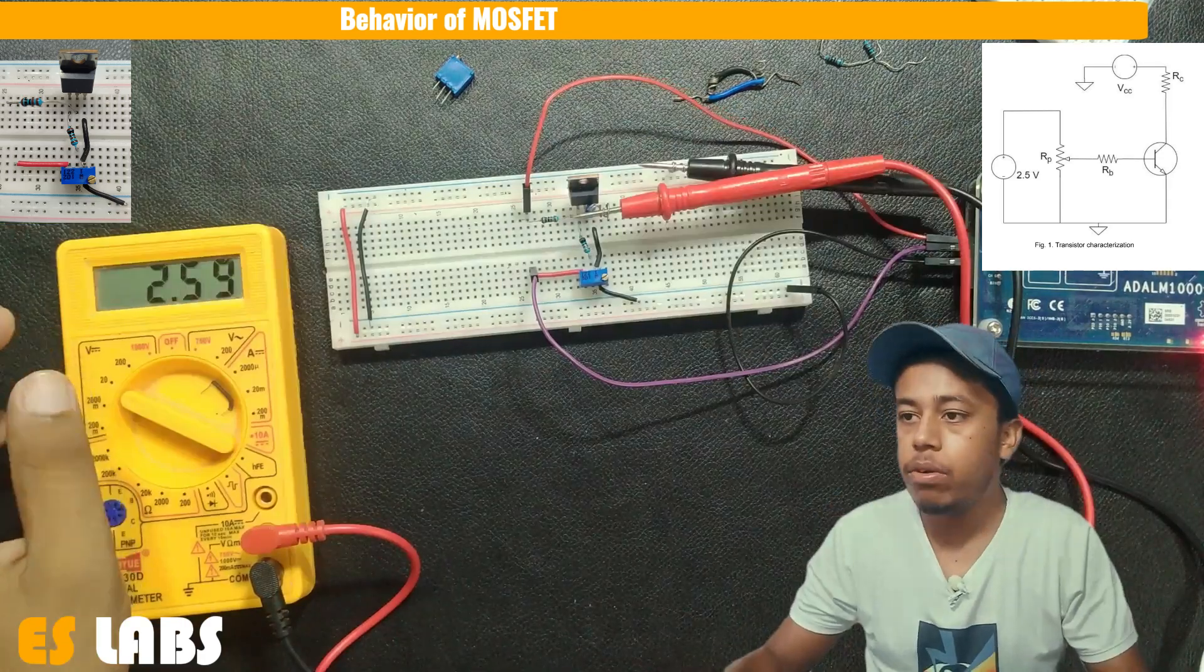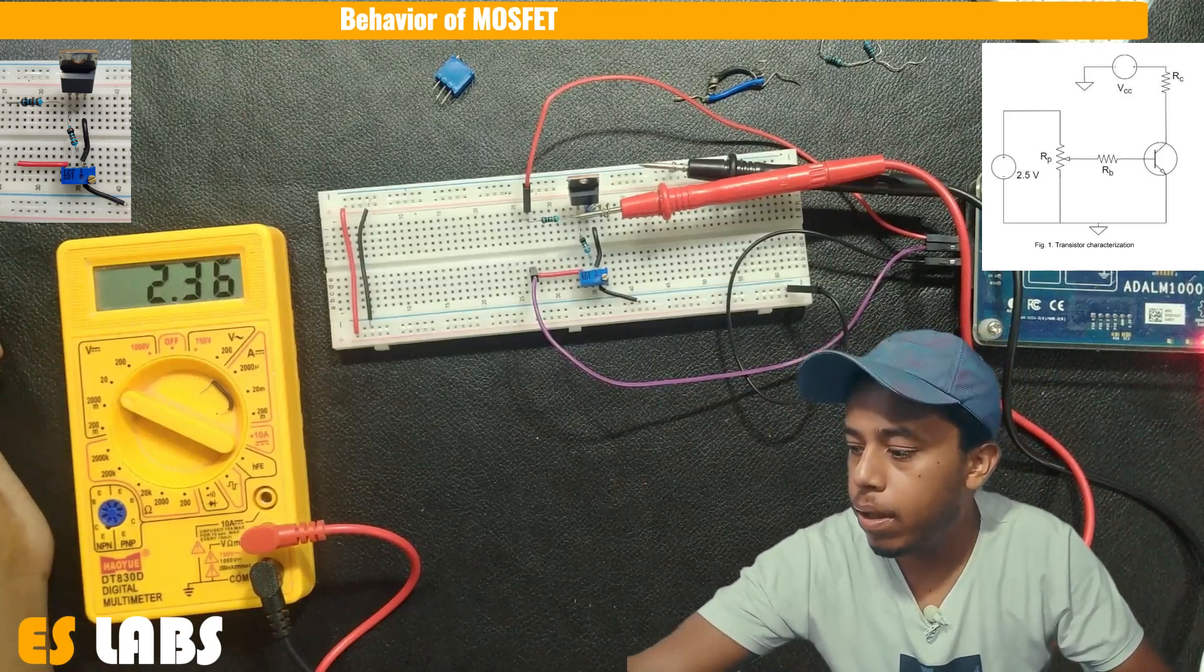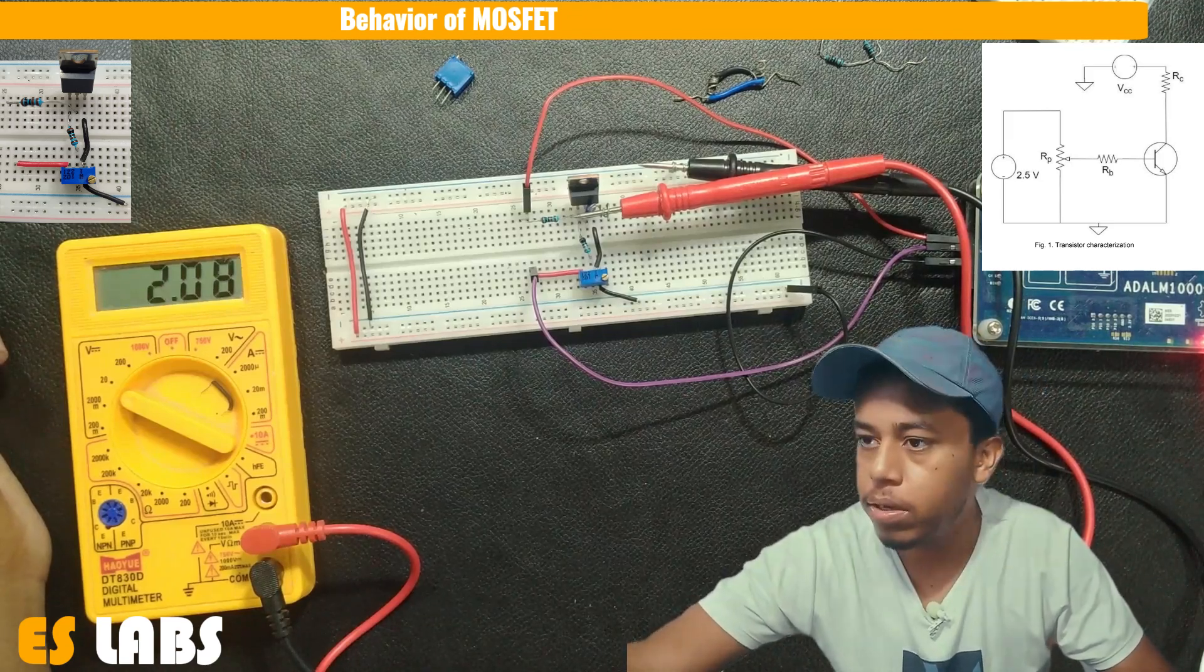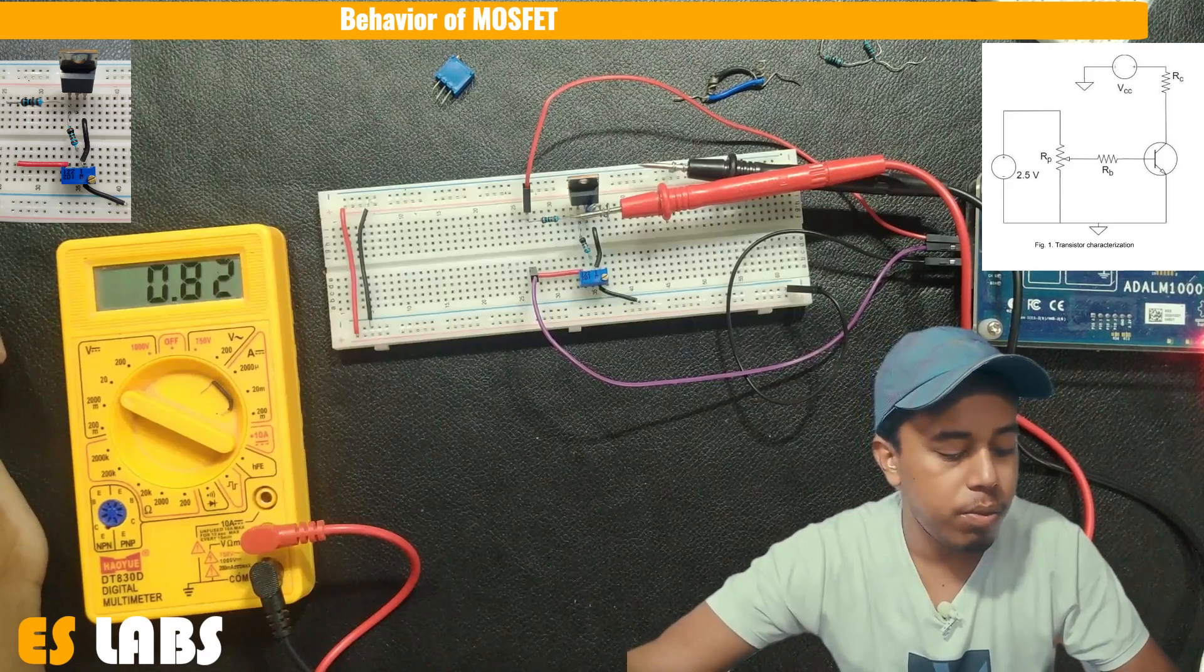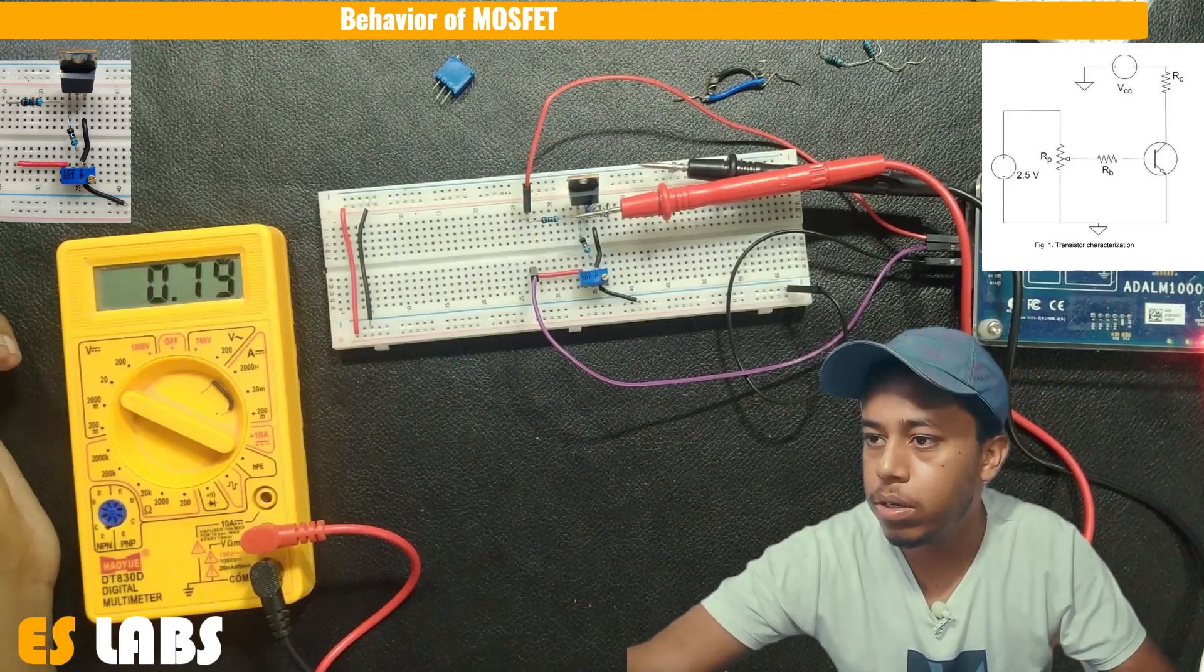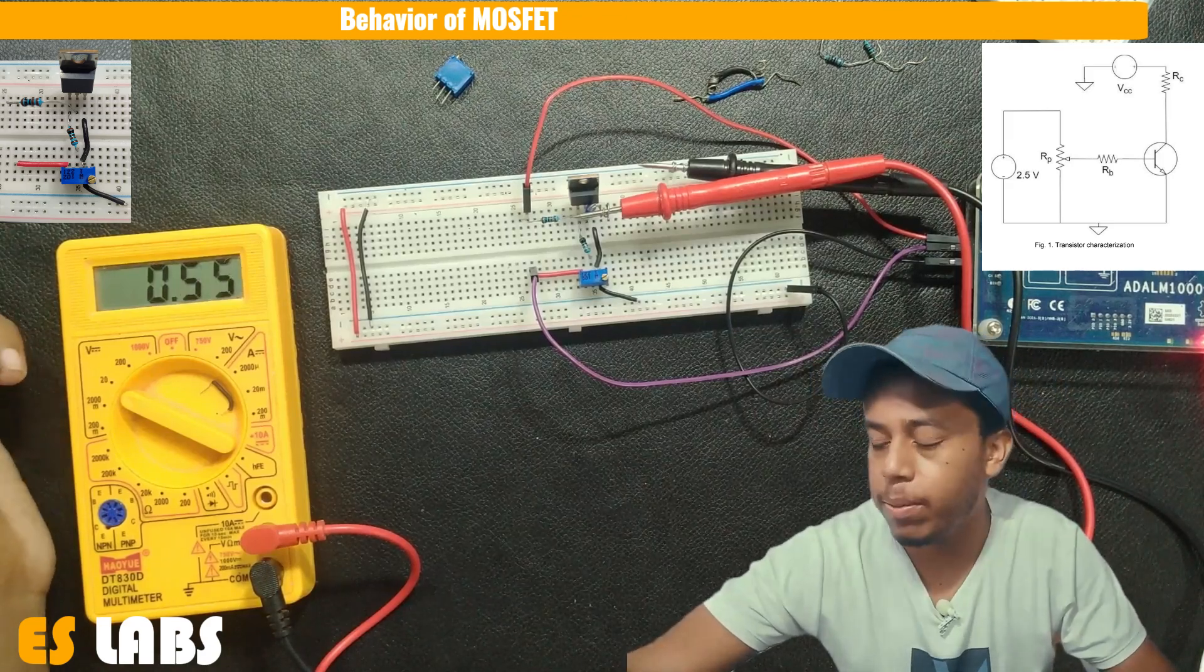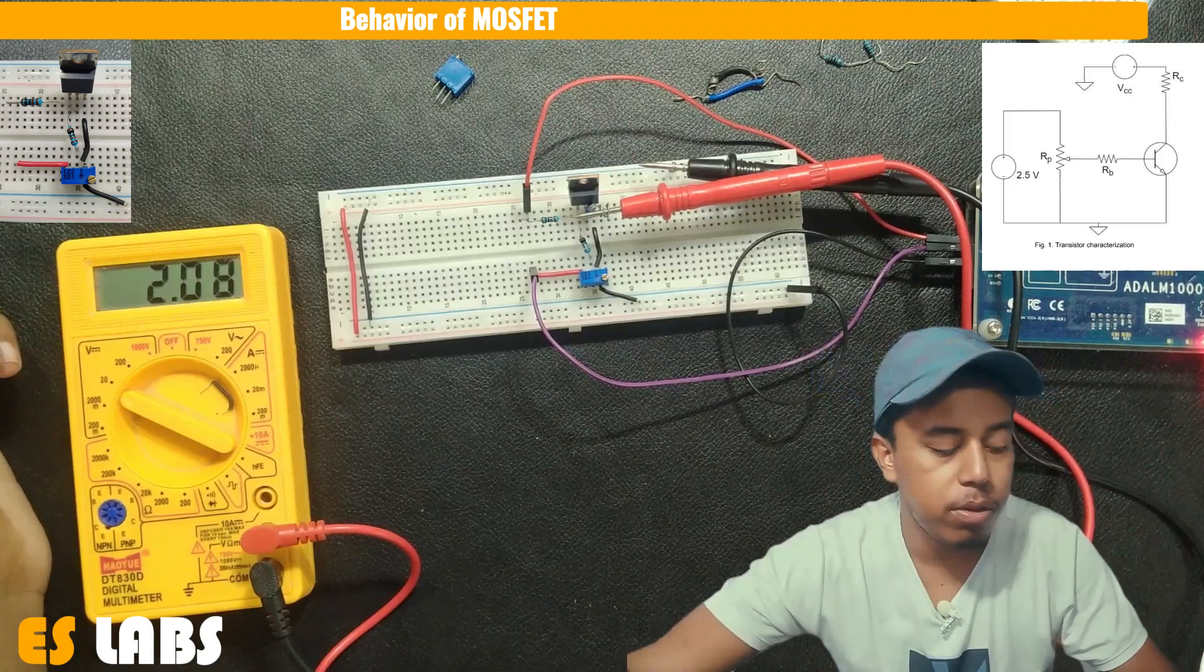So at the 4 volt, it is showing something 2.1 volt. And at the 3 volt, it is 1.92 volt. At 2 volts, it is 1.42 volt. At 1 volt, this is 0.47 volt. And at the 5 volt, this is equal to 2.98 volt.